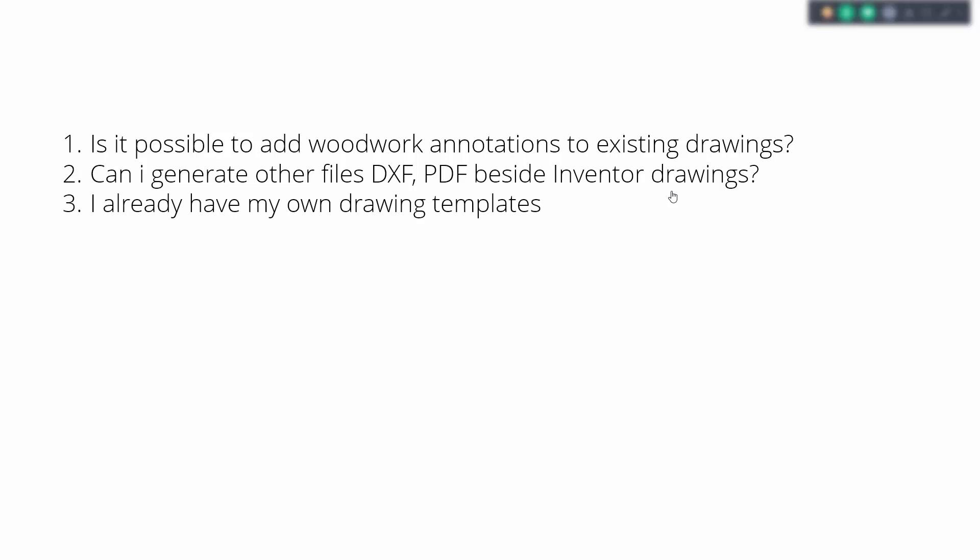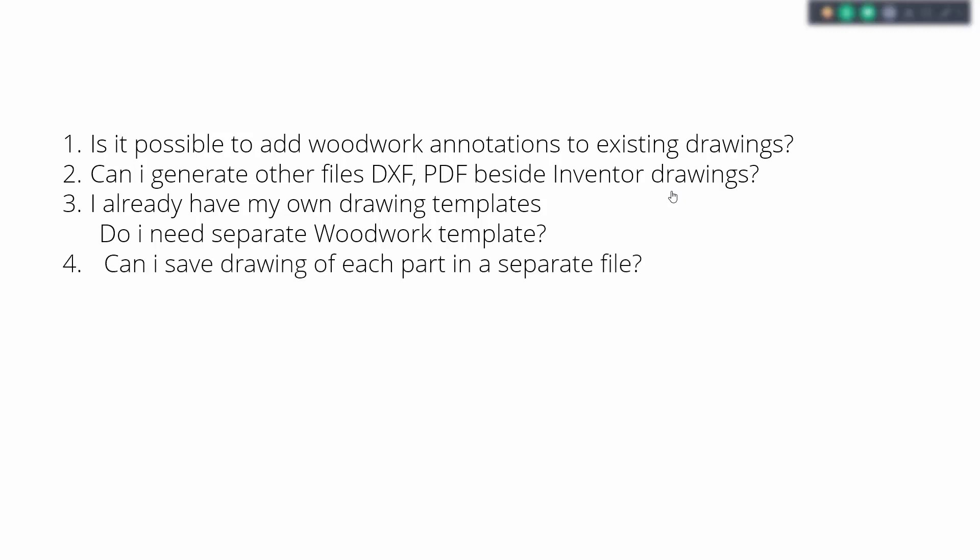If you already have your own drawing templates, you may want to add some extra information to make them suitable for Woodwork for Inventor. It's very easy — you can just add some extra information to your existing Inventor template and it will become suitable for Woodwork for Inventor. If you want to save each part to a separate file, that's also doable without a problem. You can change the purpose of the template and save each part to a separate file. This is useful when working with a wall system, where you may want a set of data about your part with the part and drawing grouped together.